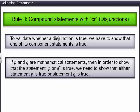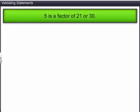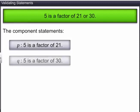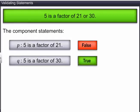Let's check the validity of the statement: '5 is a factor of 21 or 30.' The component statements are: P — '5 is a factor of 21', and Q — '5 is a factor of 30.' We know that statement P is false while statement Q is true. Hence, it is validated that the given compound statement is true.